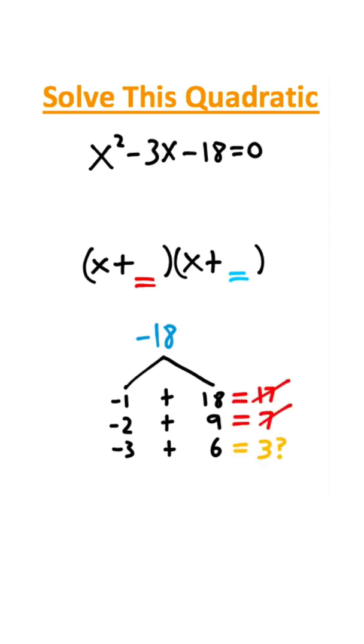And it turns out that none of these actually work, but this bottom one is close. Notice this gives us a positive 3, which means I need to swap that negative sign to the other side. And notice that 3 plus negative 6 gives us negative 3 and multiplies to negative 18. So those are going to be our two numbers right there.